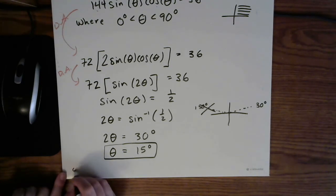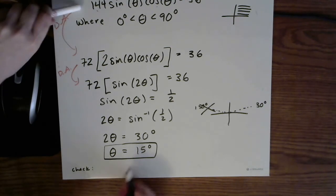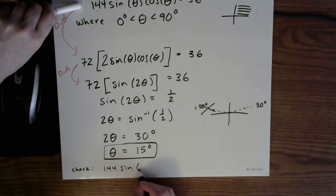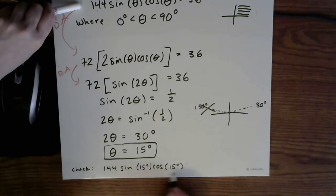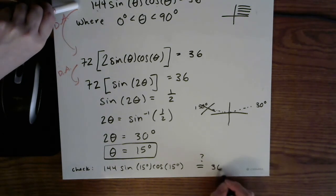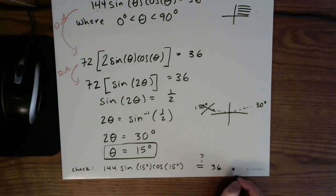Now, you could check this. In order to check this, go up to the original equation. Make sure your calculator is in degree mode and plug 15 degrees in for θ. And when you're done with approximation, you should get approximately 36. And you will.